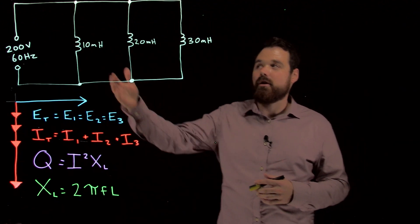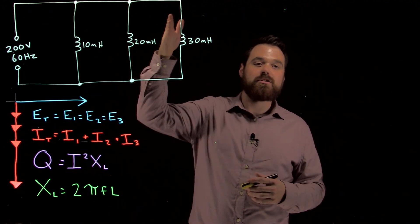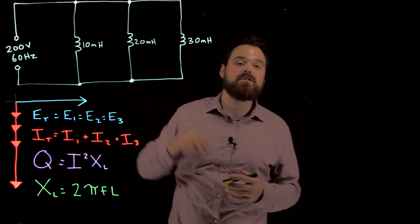The current flowing through branch 1 and the current flowing through branch 2 and the current flowing through branch 3 are all going to add up to the total current.